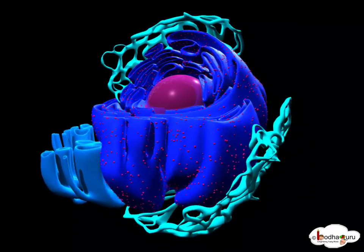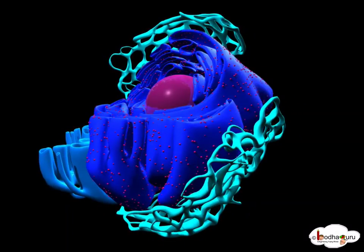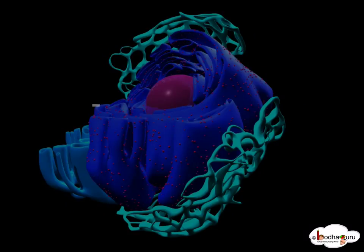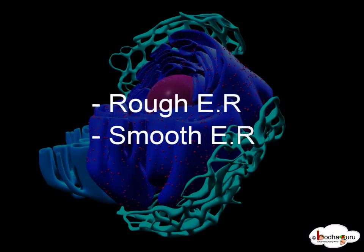There are two types of endoplasmic reticulum: rough and smooth.